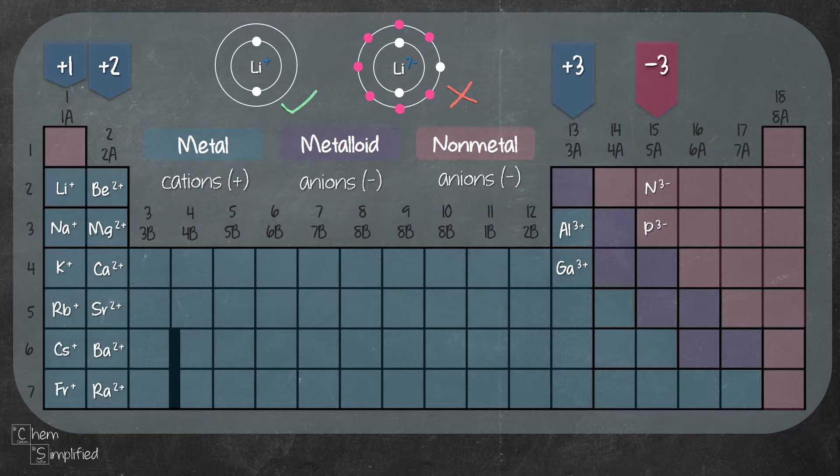In fact, there's a shortcut in calculating the charge for these metalloids and non-metals, which is you take the group number and then subtract 8. Let's give it a try.